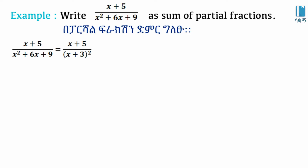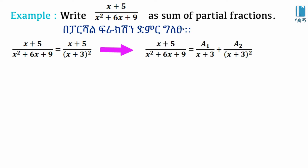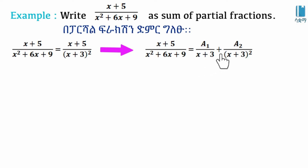We have the multiplicity of x plus 3. In this case, we set up the terms of the partial fractions: A1 over x plus 3, and A2 over x plus 3 squared.